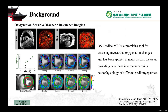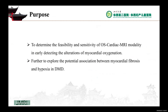Oxygenation-Sensitive Cardiac Magnetic Resonance Imaging is a non-invasive, contrast-independent technique for mapping and monitoring cardiac oxygenation changes, and has been applied in many cardiac diseases, providing new insights into the underlying pathophysiology of different cardiomyopathies. This study aims to determine the feasibility and sensitivity of OS cardiac MRI in early detecting alterations of myocardial oxygenation, and to explore the potential association between myocardial fibrosis and hypoxia in DMD.